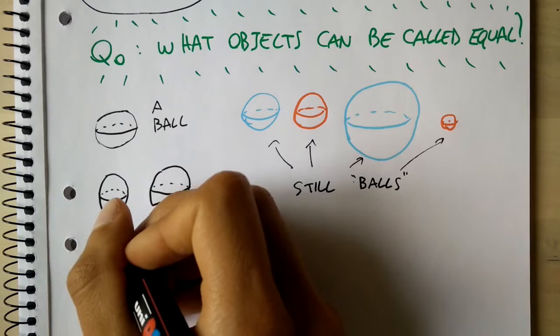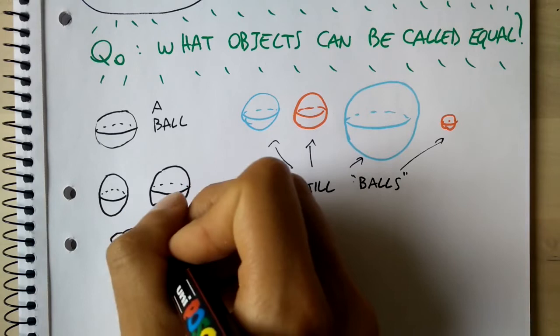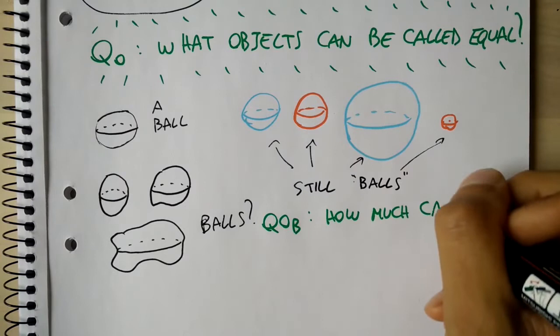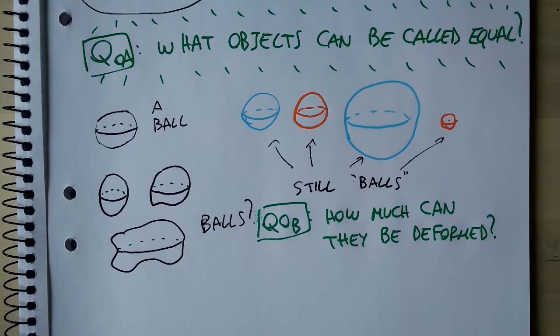As other question as it might seem, you have for sure unconsciously already provided some answer to this question at some point in life. For example, by saying that balls of different colors are still balls, and balls of different sizes are also still balls. Funny enough though, it doesn't take long for the problem to become more subtle.